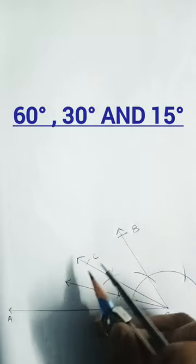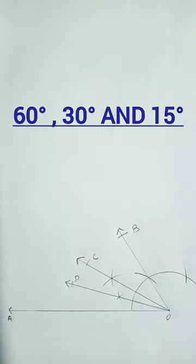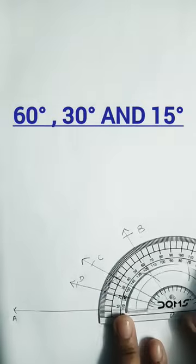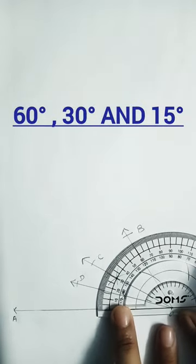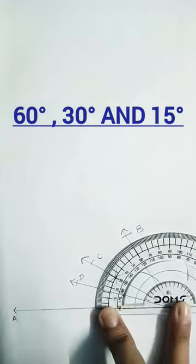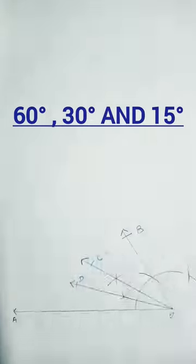So C and D, angle CO is 30° and DO is 15°. Let's measure it by keeping the protractor, so this one is 60°, 30°, and 15°.